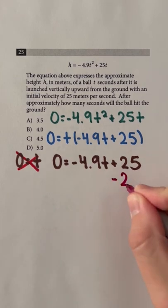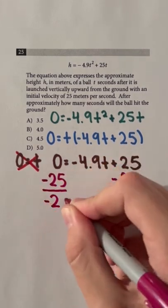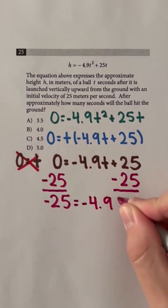First, we can subtract 25 on both sides of the equation to get negative 25 equals negative 4.9t.